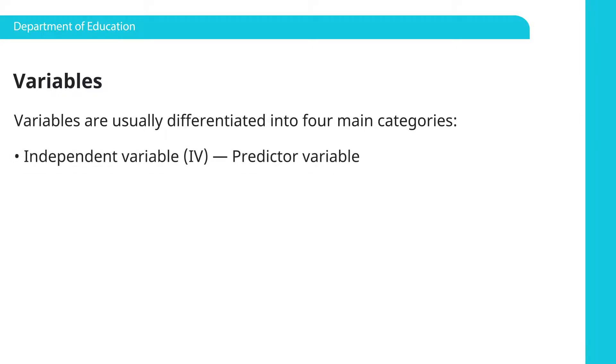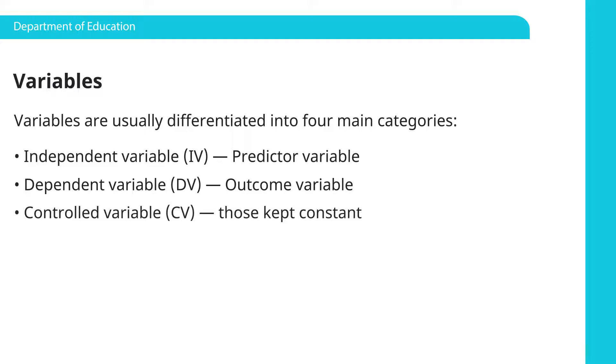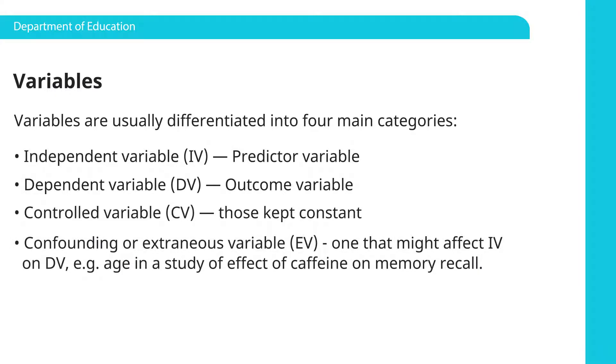So variables are usually differentiated into four main categories: the independent variable, IV, or a predictive variable; a dependent variable, DV, or outcome variable; a controlled variable, something that's kept constant; or a confounding or extraneous variable, one that might affect the independent on the dependent variable.